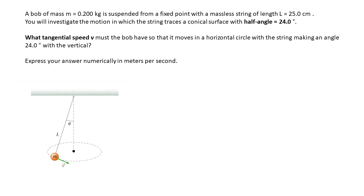We have a ball of mass 0.2 kg which is suspended from a fixed point with a massless string of length 25 cm. You will investigate the motion in which the string traces a conical surface with a half-angle 24 degrees.